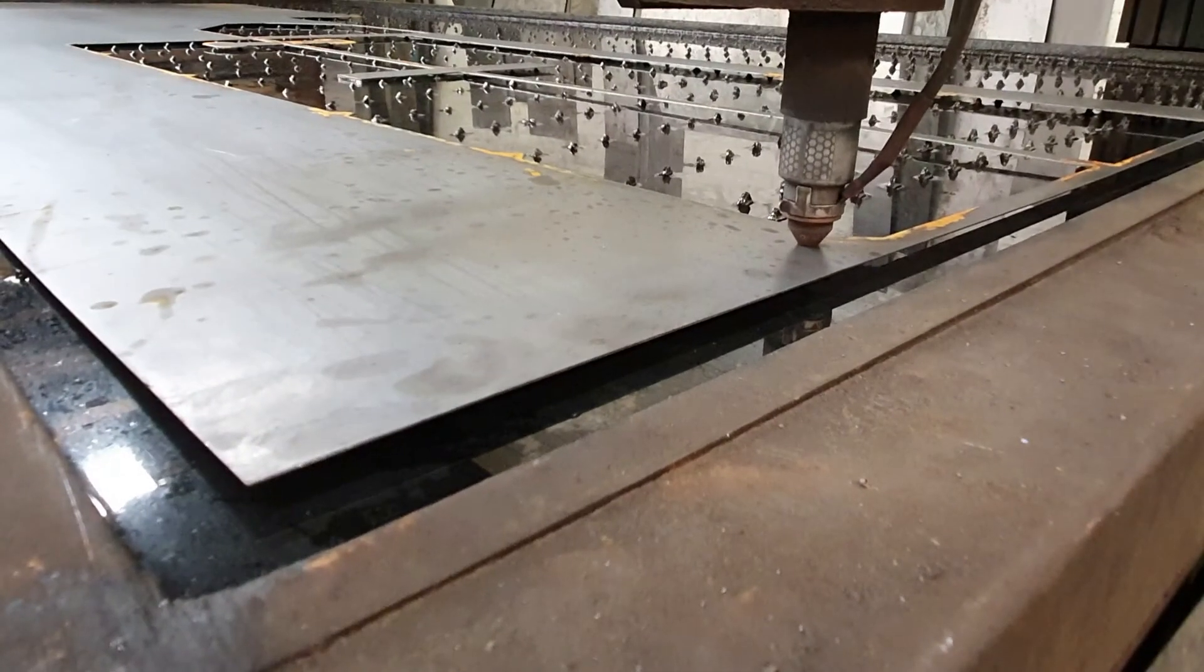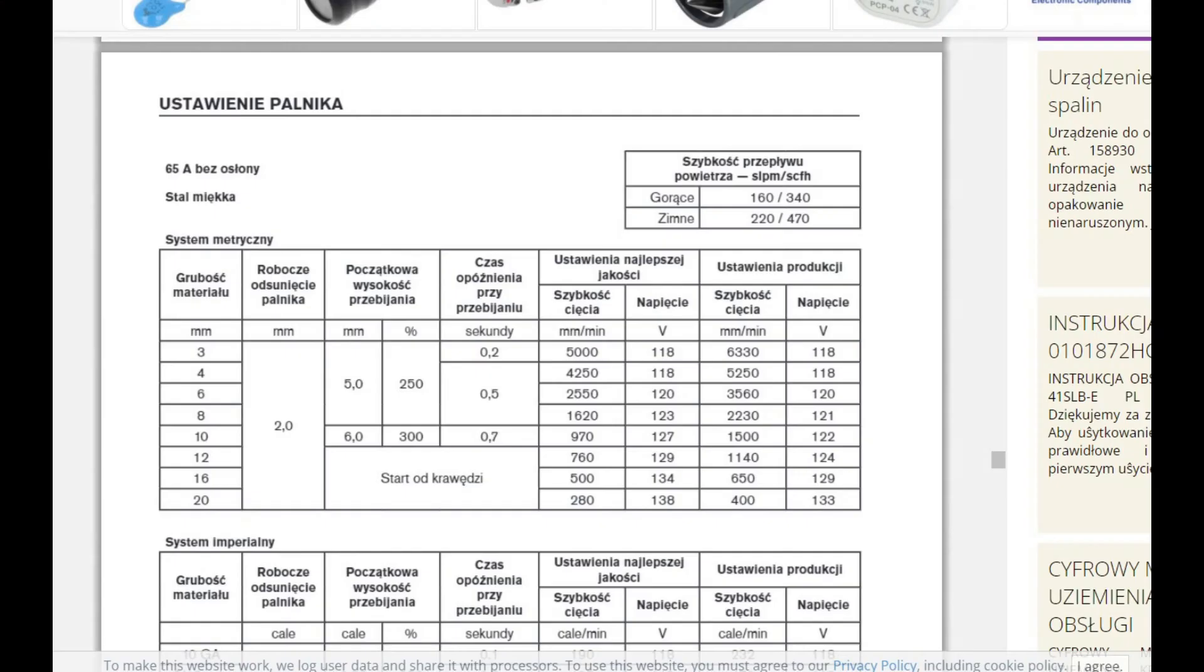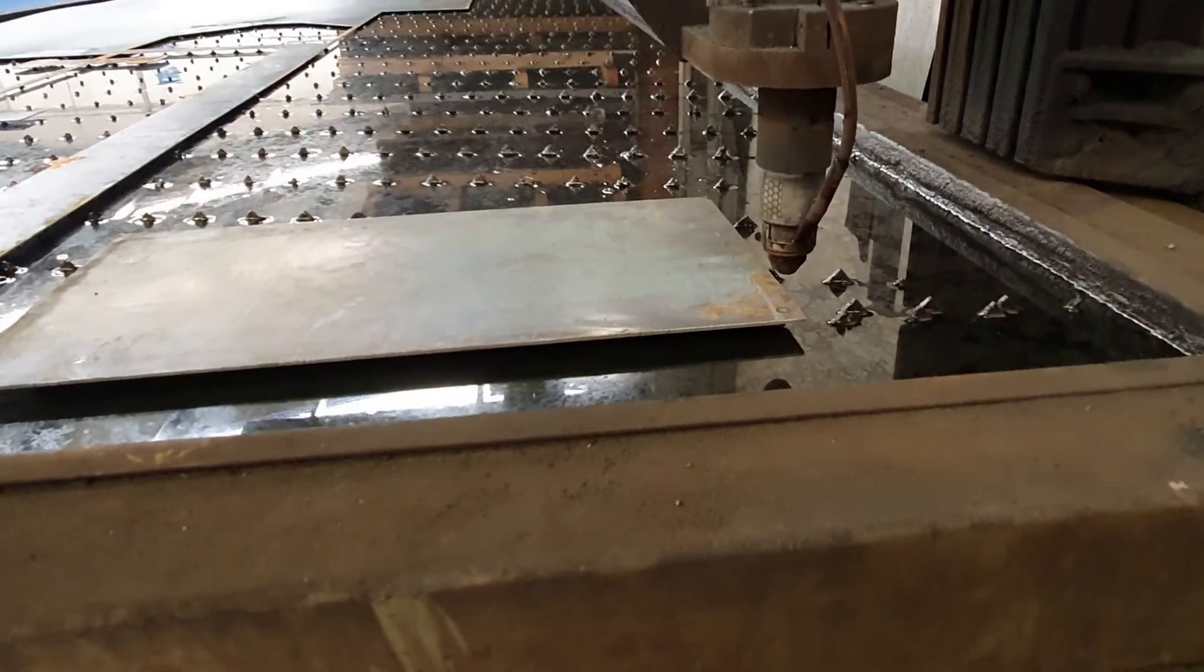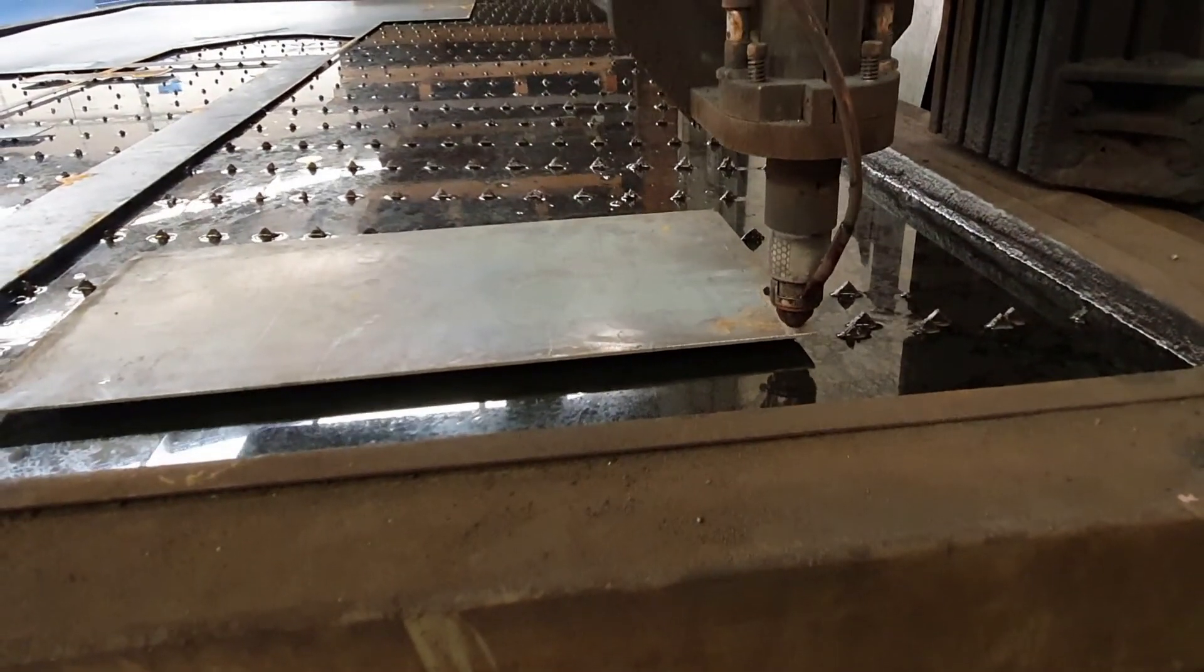Lay down an even straight piece of material and set the correct cutter parameters and cutting speed. Switch off the THC height control in the software. Bring the torch two to three millimeters above the material.